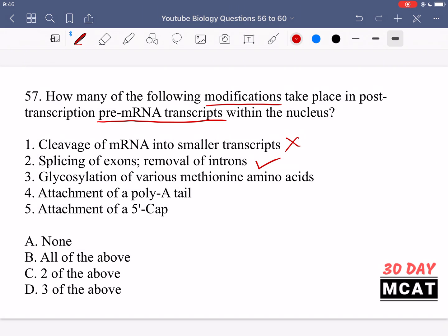Option three says glycosylation of various methionine amino acids. This is incorrect because first, glycosylation doesn't really happen to RNA transcripts. And secondly, it's talking about methionine amino acids - we're still talking about RNA inside the nucleus. It's only when it goes outside the nucleus that it's translated into any type of protein with amino acids. All that takes place outside of the nucleus, so this is not something that's going to happen.